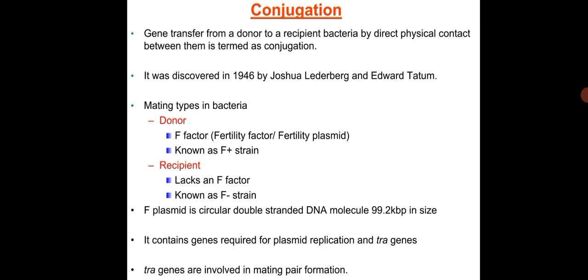F+ strains are the source of donor DNA — the fertility plasmid or F factor. F− strains are recipient cells that lack the F plasmid. F plasmids are circular double-stranded DNA molecules, 99.2 kbp in size, containing genes required for plasmid replication and tra genes involved in mating pair formation.